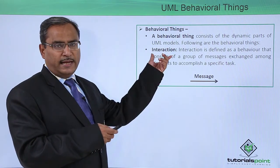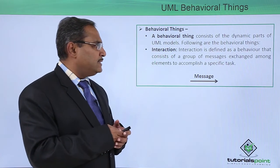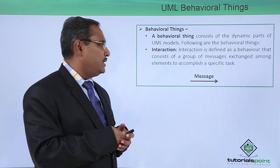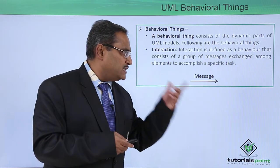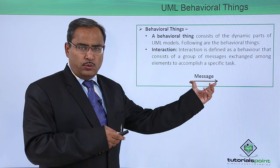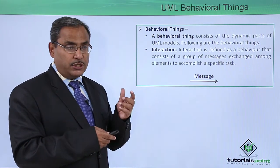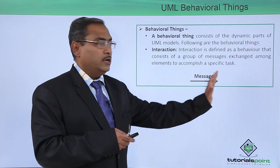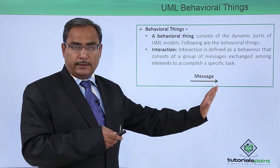The first one is interaction. Interaction is defined as a behavior that consists of a group of messages exchanged between elements to accomplish a specific task. Here we will have a directed arrow with a message written above it, going from one component to another element.